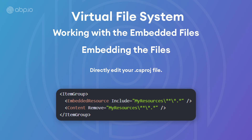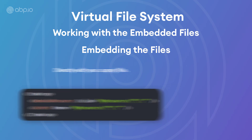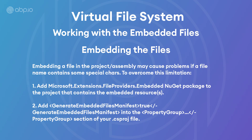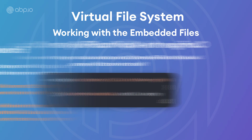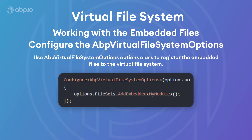Now if the file name contains some special characters, this could cause some problems. And to overcome this limitation, make sure to take these two steps — we'll do that in the code part. To register the embedded files into the virtual file system, use the ABP virtual file system options class.